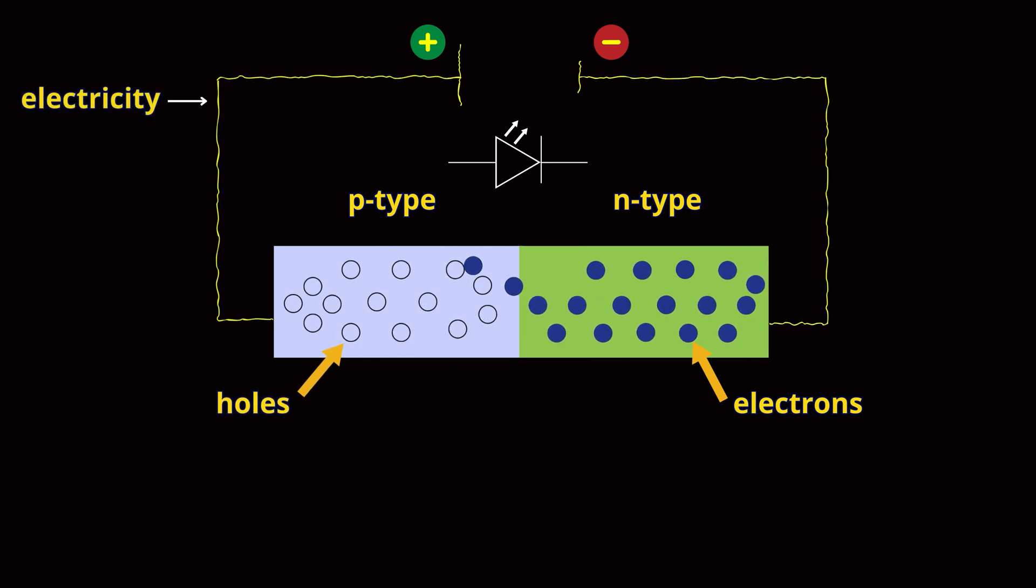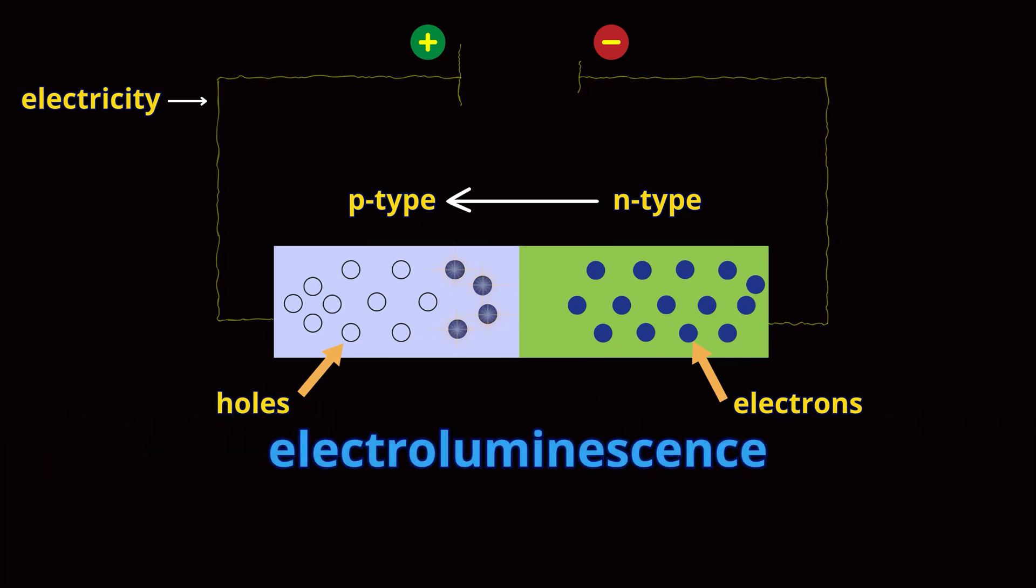When electricity is applied, electrons flow from the N-type layer to the P-type layer. Electrons release energy in the form of photons, which is light. This process is called electroluminescence, the core mechanism behind how LEDs generate light.